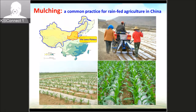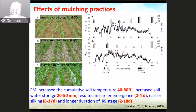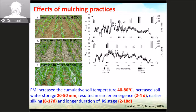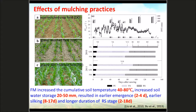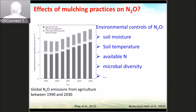What are the effects of the mulching practice? From our work, mulching can increase the soil temperature and increase the soil water storage. This results in earlier maturity and earlier silking and longer durations of the reproductive stage, which can increase the yield. Regarding N2O emissions, global N2O emissions from agriculture are about 16 percent.